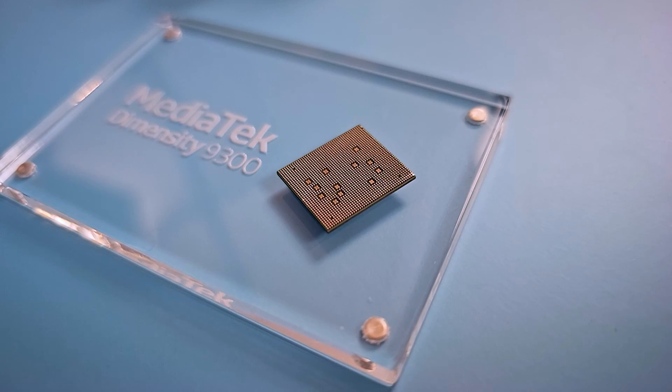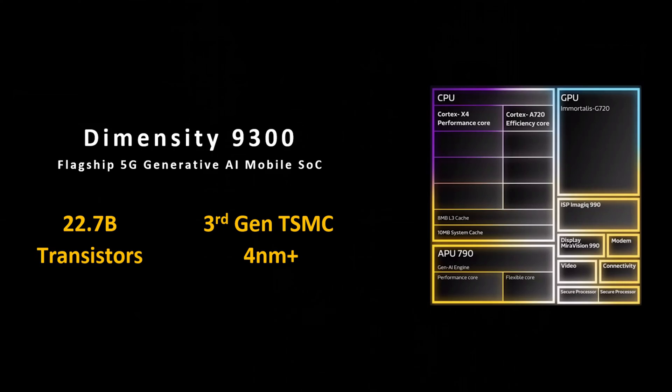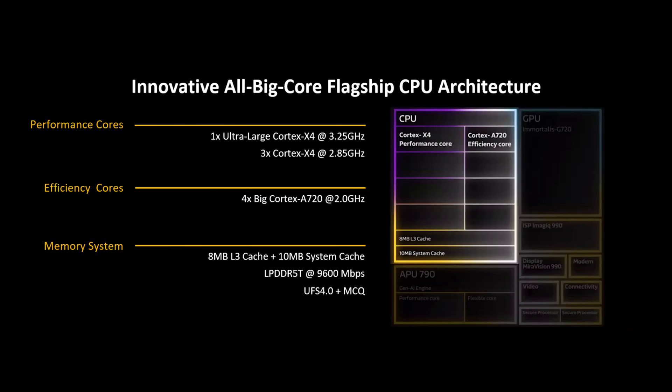So what are the biggest wins with the 9300? We're going to get geeky with some numbers and an explanation of what those numbers mean. Feel free to pause this video wherever you need to, because there's a lot of information here about chips and chipsets, and it can get a little confusing if you've never followed along with this kind of information before. The Dimensity 9300 has 22.7 billion transistors, which is a ridiculous number for a mobile CPU, and it uses 4nm plus technology. The design features 4 performance cores, 4 efficiency cores, and the memory was upgraded to LPDDR5T at up to 9600 megabits per second.